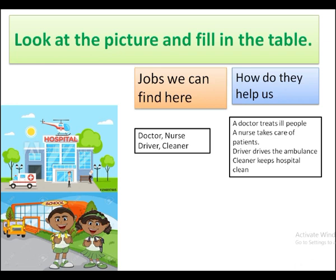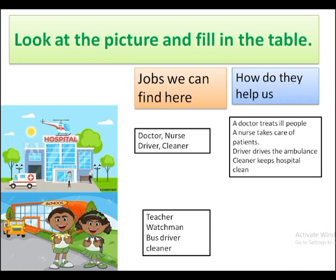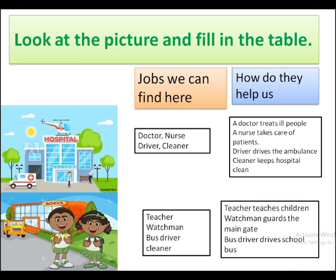The next picture is of a school. What kind of jobs can we find here? A teacher, a watchman, a bus driver, and a cleaner. How do they help us? A teacher teaches children how to read and write. A watchman guards the main gate of the school. A bus driver drives the children to school. A cleaner keeps the school clean.